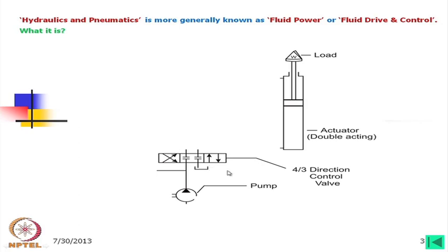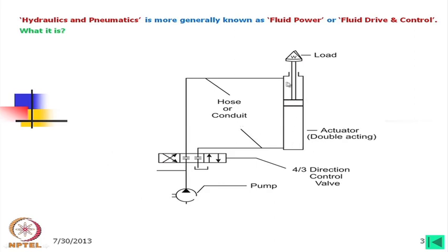We can connect this valve to the cylinder by conduit or pipe — one end connected to the bottom and the other to the top of the double acting actuator. If we look at the left side of the directional control valve, the pump will be connected to the bottom and the top side will be connected to the drain, so the load will be lifted. Similarly, if we actuate this valve to the right side, the oil will be entered from the top and the load will come down.